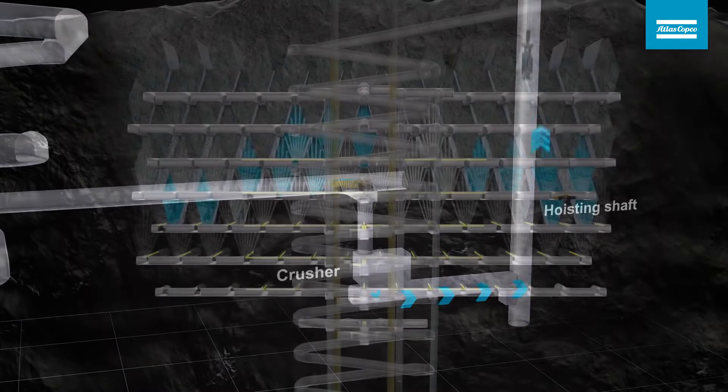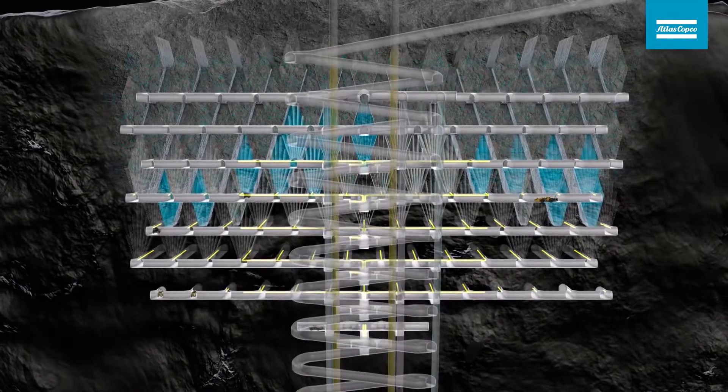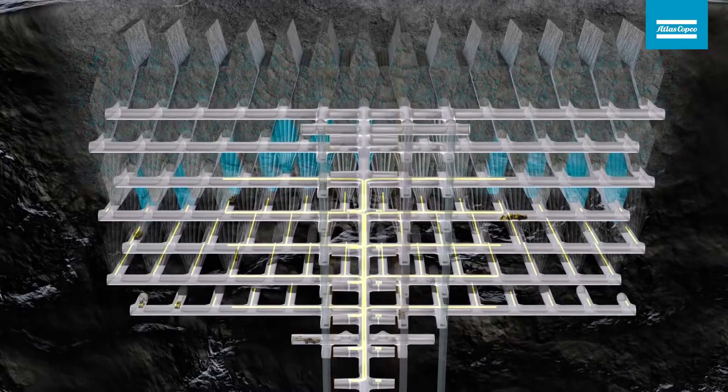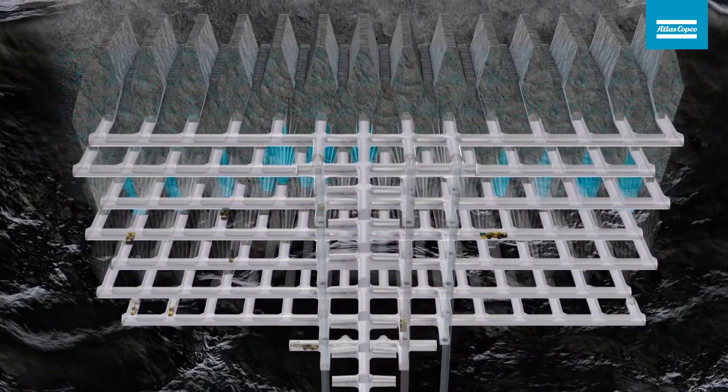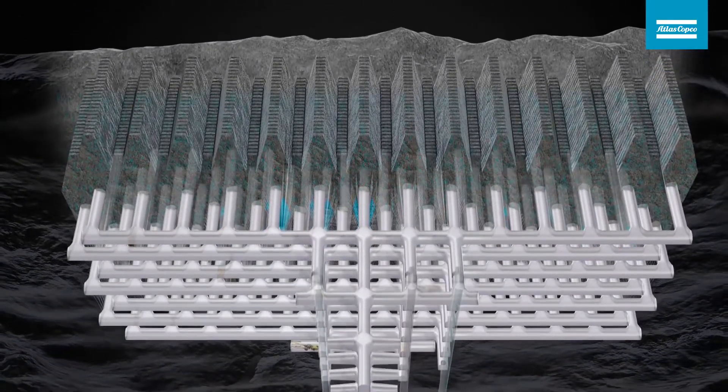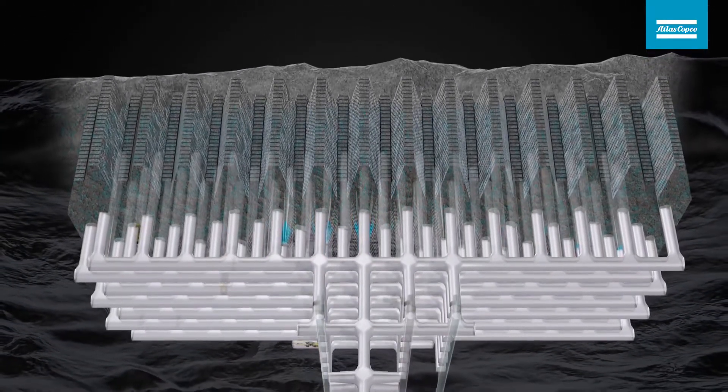Each sublevel features a systematic layout with drifts across the ore body. Activities in the parallel production drifts are performed simultaneously in order to maintain a good process in the mine.